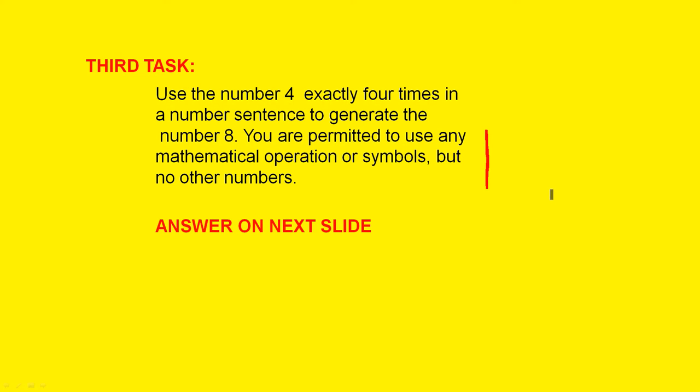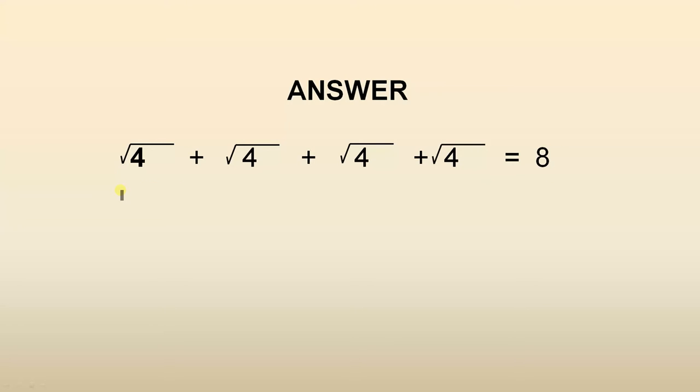This one's a little bit tricky, but when you actually see the answer, it's quite obvious. The square root of 4 plus the square root of 4 plus the square root of 4 plus the square root of 4. And that gives you 8. Quite obvious when you see the answer.